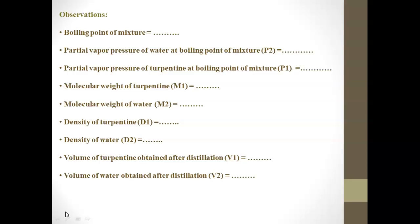The observations for this experiment include: the boiling point of the mixture, the partial vapor pressure of water and turpentine at the boiling point of the mixture, the molecular weight of turpentine and water, the density of turpentine and water, and the volume of turpentine and water obtained after distillation. These observations will also be discussed in the calculation part.